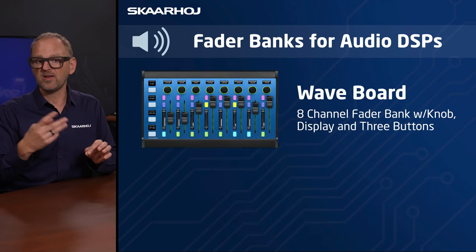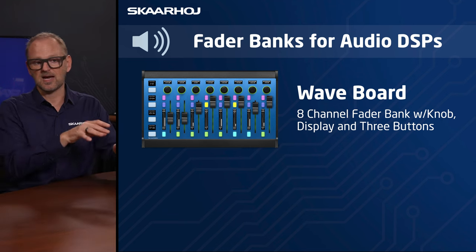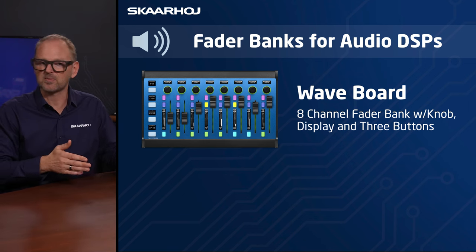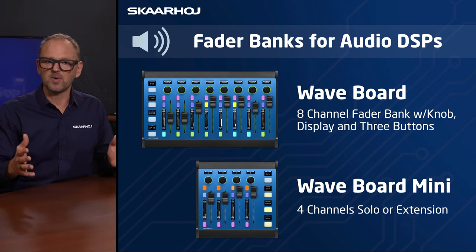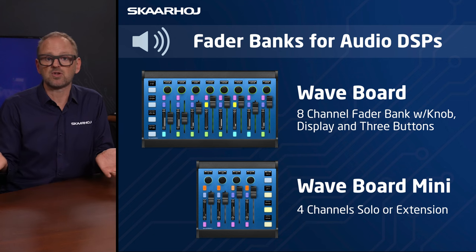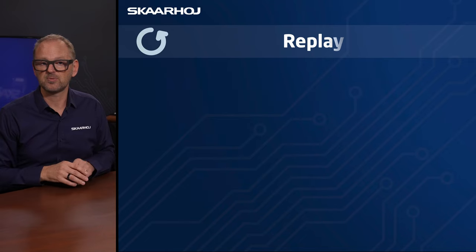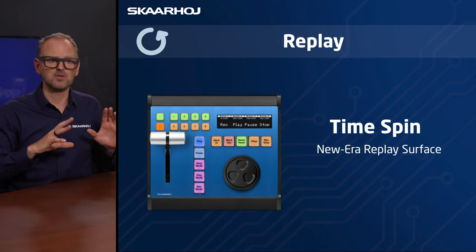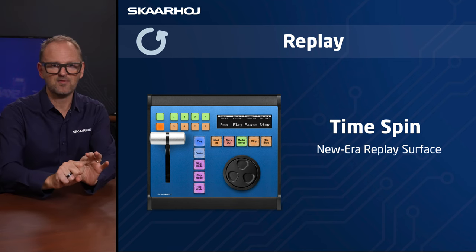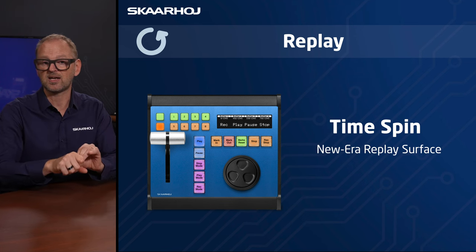For audio fader banks, we have Waveboard and Waveboard Mini. Waveboard is 8 channels with a fader that has a display, a knob on top with a display, and 3 buttons you can assign to solo, mute, etc., with auxiliary buttons on the side for paging. Waveboard Mini is essentially the 4-channel version and can be used solo or as an extension to the Waveboard. For Replay, we have Time Spin — a new-era replay surface. Products it works with include VMIX, DreamChip SSM-500 slow motion camera, M-Replay from Softron, and TriCaster from VisRT.